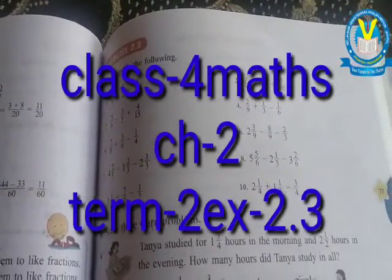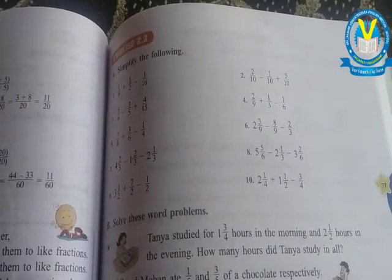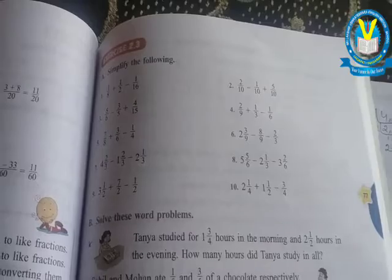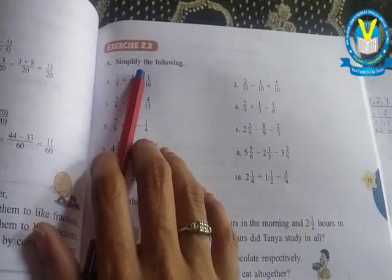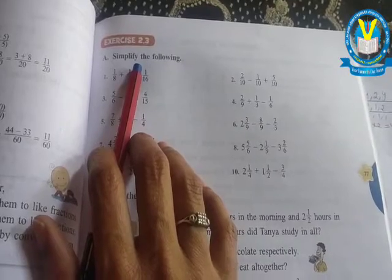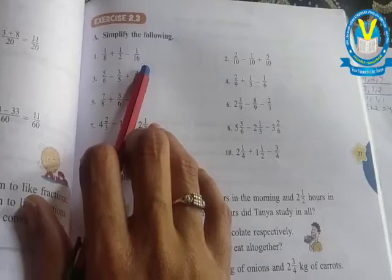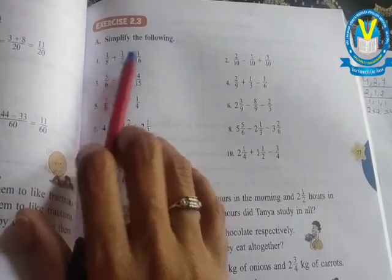Hi everyone, this is Satyakala dealing with mathematics of class 4. We have completed in previous videos up to exercise 2.2. Now going to exercise 2.3 in term 2. First, simplify the following. In previous videos we learned additions and subtractions with fractions, unlike fractions or like fractions. But here we have three fractions and two symbols.